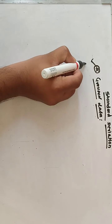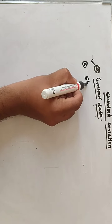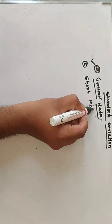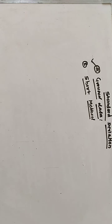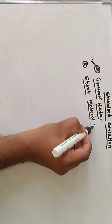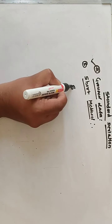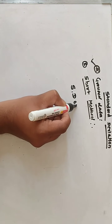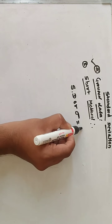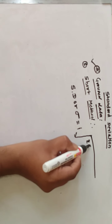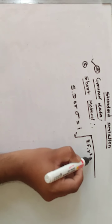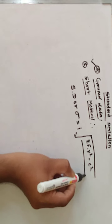The next method is method number two, that is the short method. Using some formulas we calculate the standard deviation by short method. The formula for the short method is: standard deviation is equal to i into square root of summation of f·x² minus c² divided by summation of f.